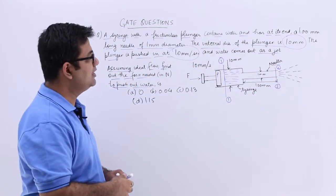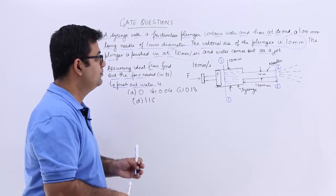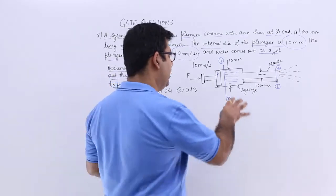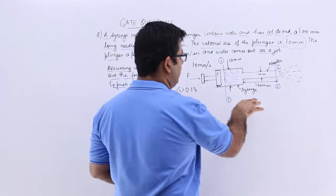So if you apply Bernoulli's equation between these two sections, first of all let us assume that for syringe the subscript we use is 1, for needle the subscript is 2.